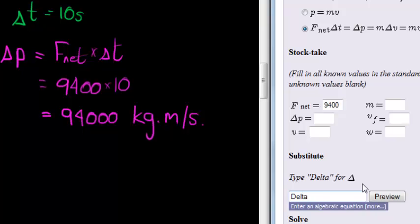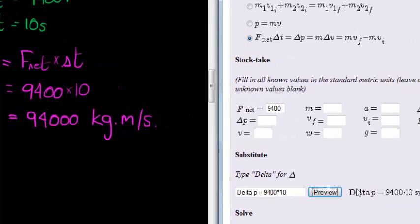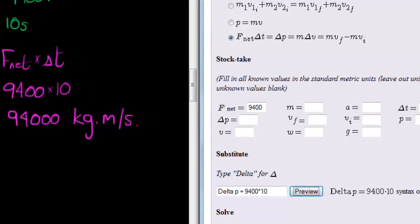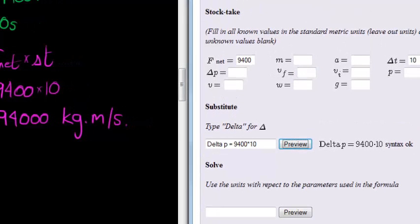So we have that delta P is equal to, and it's equal to 9400 times 10, preview. Delta P, sometimes this will change it into delta, don't worry if it doesn't. If it says syntax, you are doing fine.